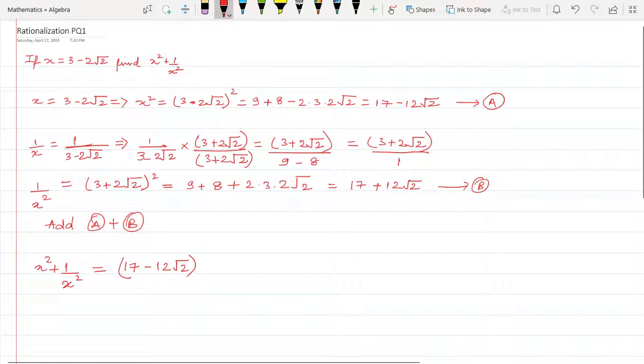Plus Part B, which is 17 plus 12 root 2. And when we add these, x squared plus 1 upon x squared equals 34. And this is the final answer. I hope you find this video useful.